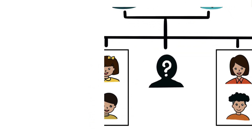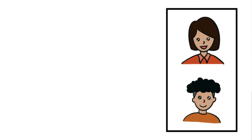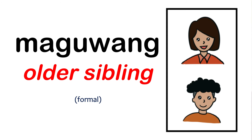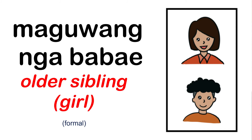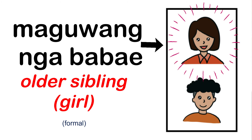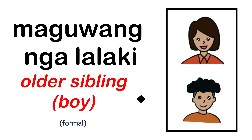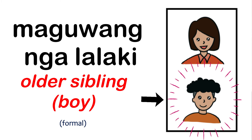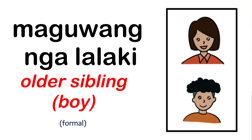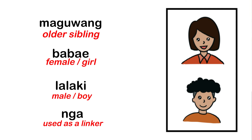Now let's switch to the right side of the tree for the older siblings. The word for older sibling is maghud. For older sister we say maghud nga babae, and for older brother we say maghud nga lalaki. To be more specific, you can also use the term maguang nga igsuon.